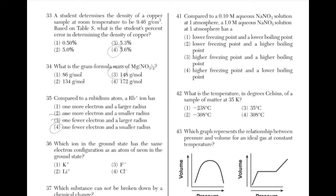Which ion in the ground state has the same electron configuration as an atom of neon in the ground state? Neon has an electron configuration of 2,8. K+ will have an electron configuration of 2,8,8, so the answer is not 1. Li+ will have an electron configuration of 2, so the answer is not 2. F− would have an electron configuration of 2,8, so the answer is 3.